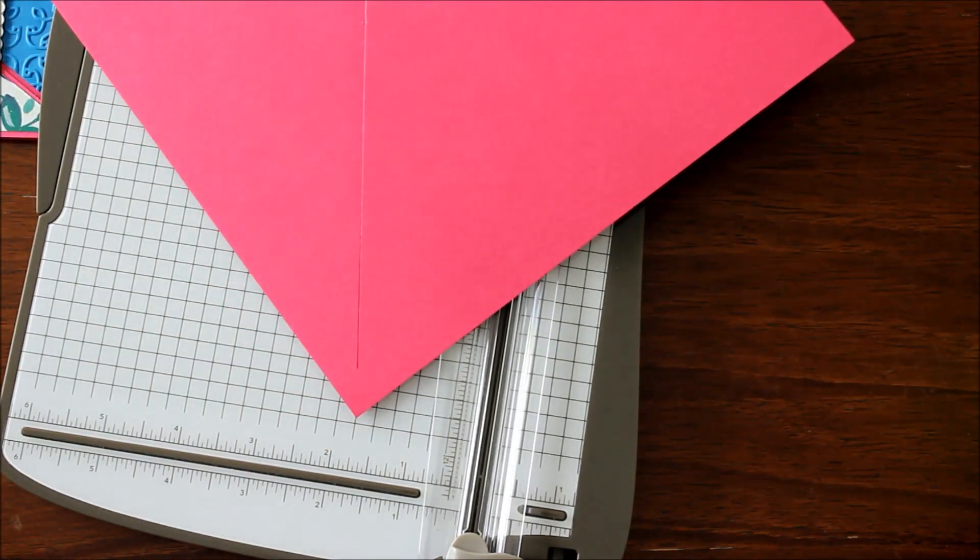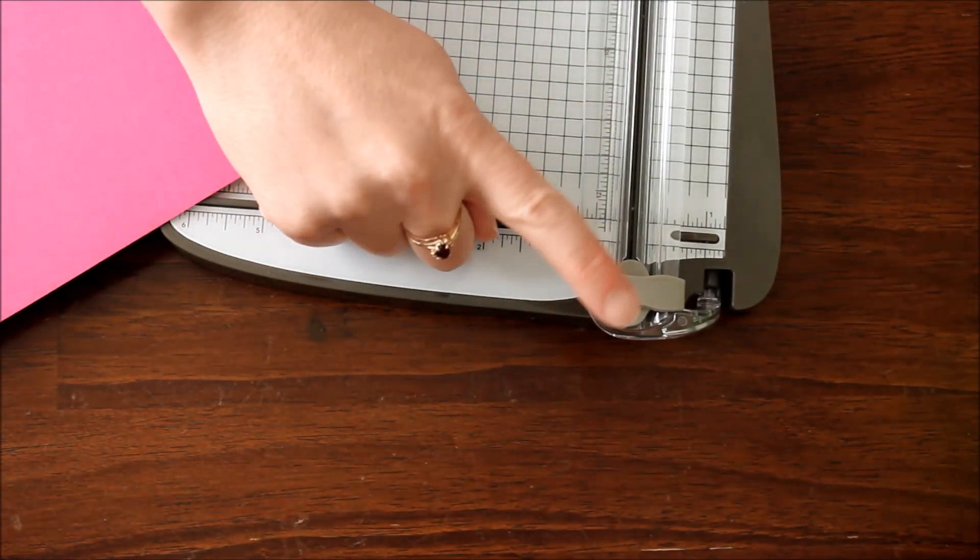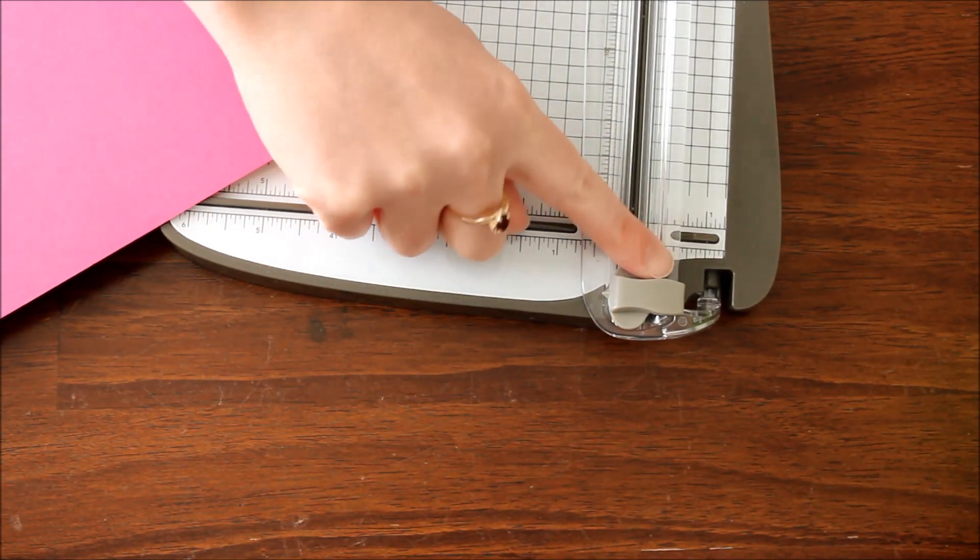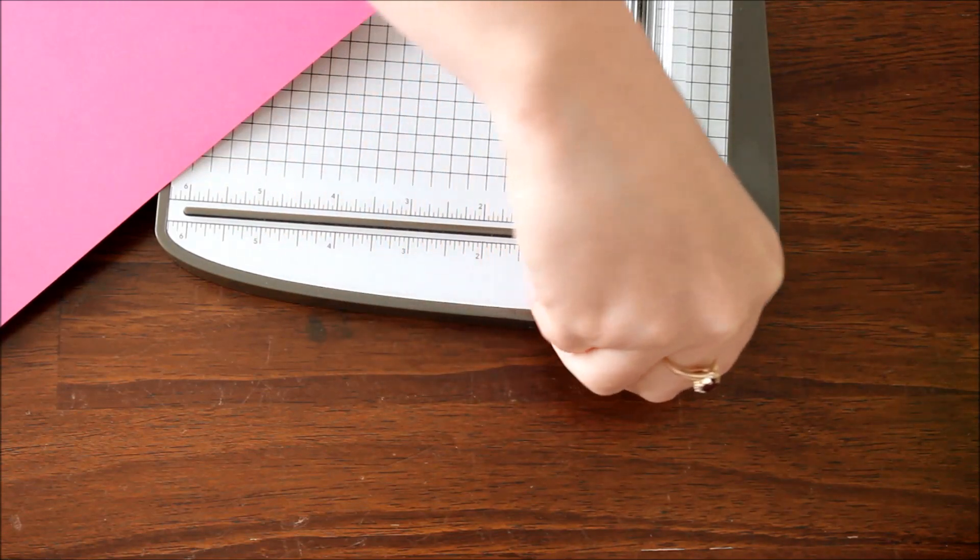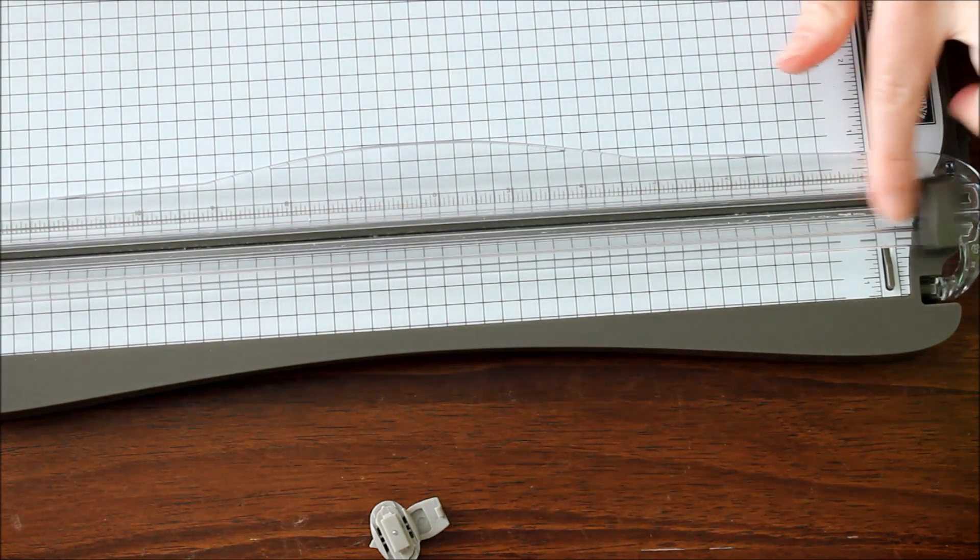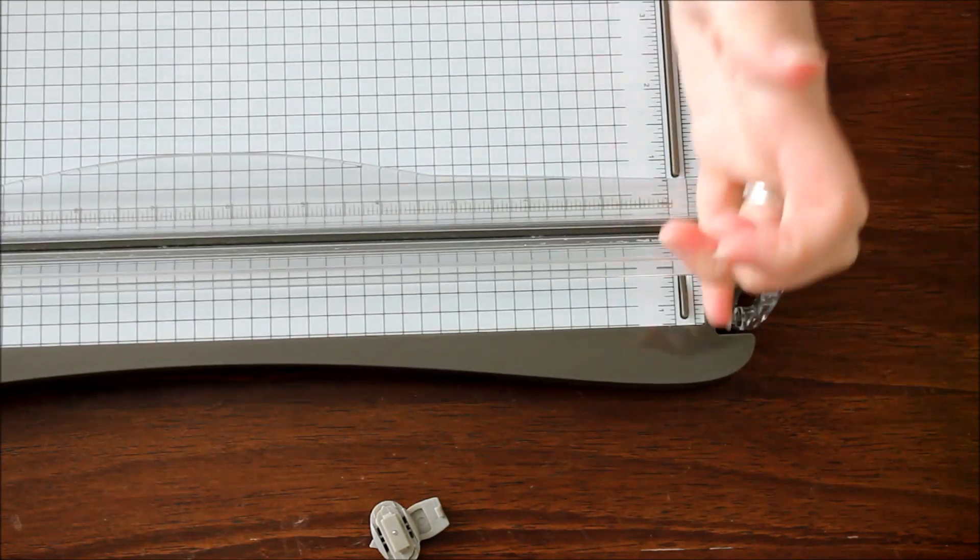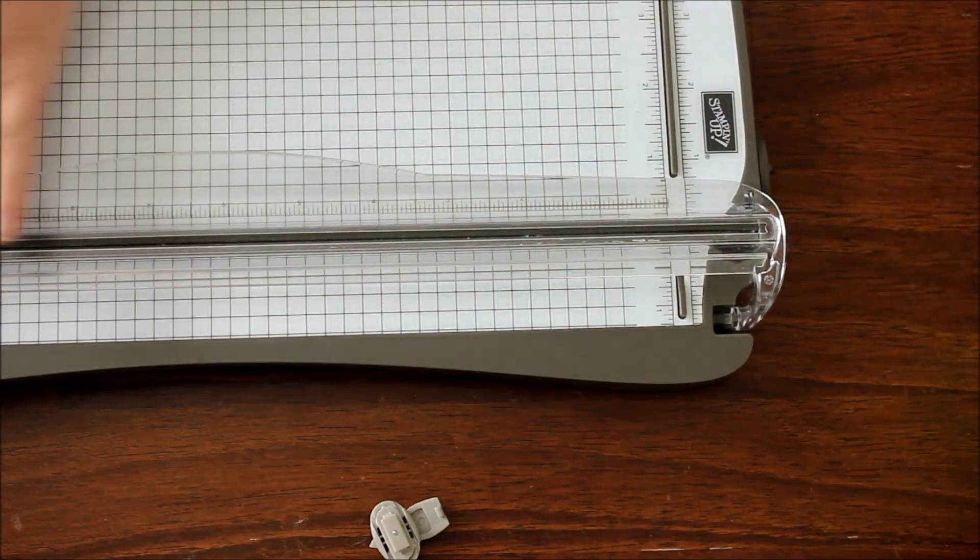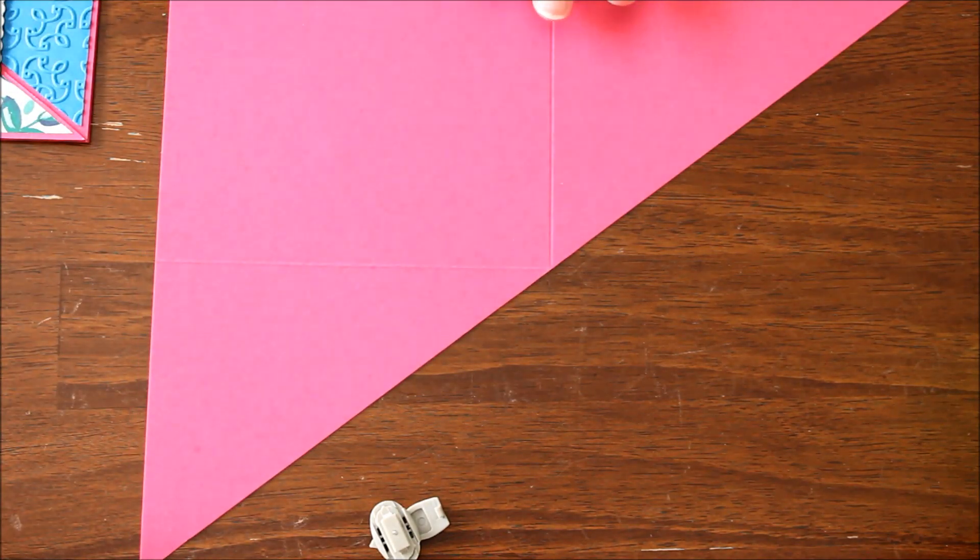So I just have that little bit left over which I'm just going to cut with my paper snips the rest of the way. You'll want to make sure to take out your score blade so that your cutting blade can go all the way to the top. Then your blade will be able to go past this line and cut diagonal corner to corner all the way. So then you're left with a piece of cardstock that looks like this.